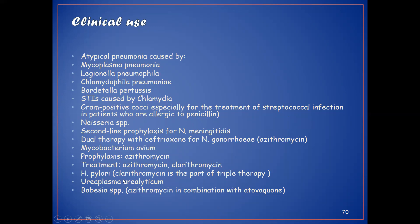For H. pylori, clarithromycin is part of the triple therapy. Macrolides are also used for Ureaplasma urealyticum and Babesia species.